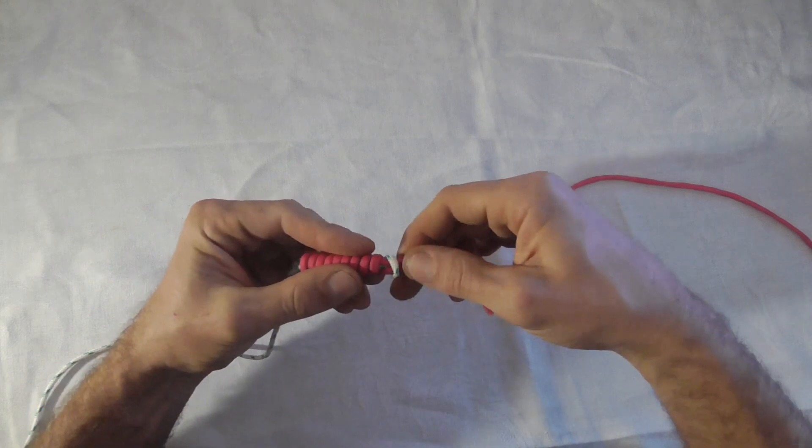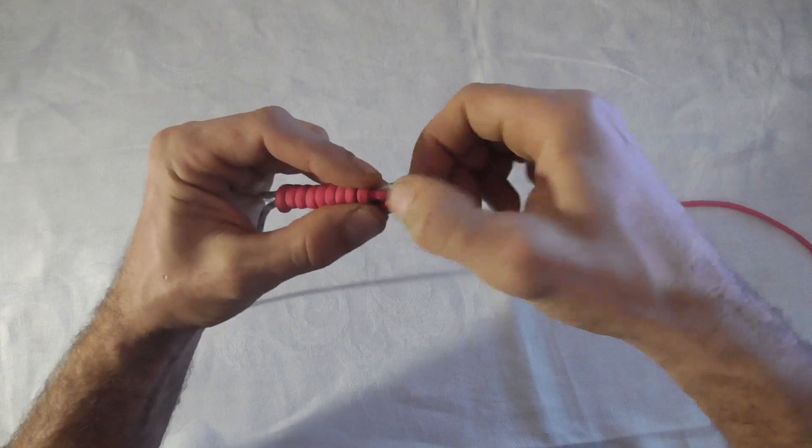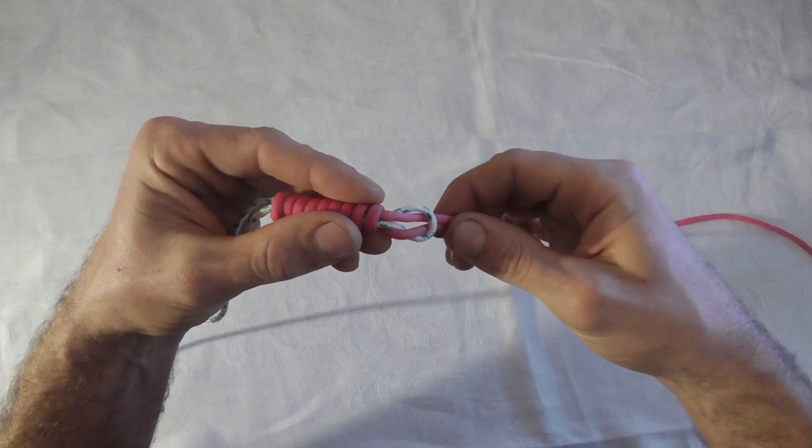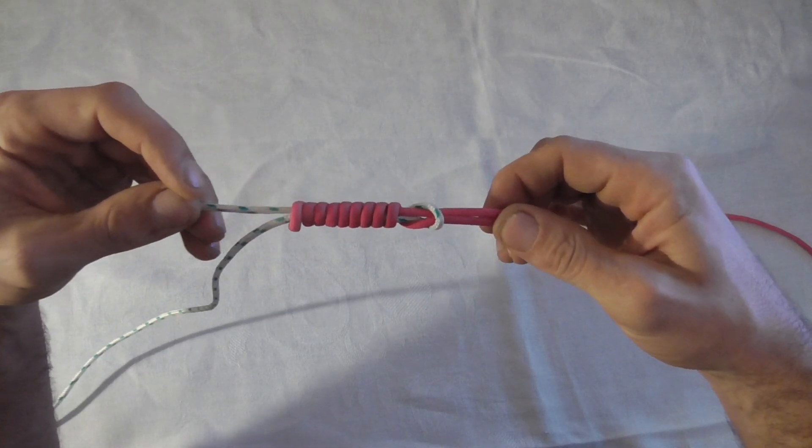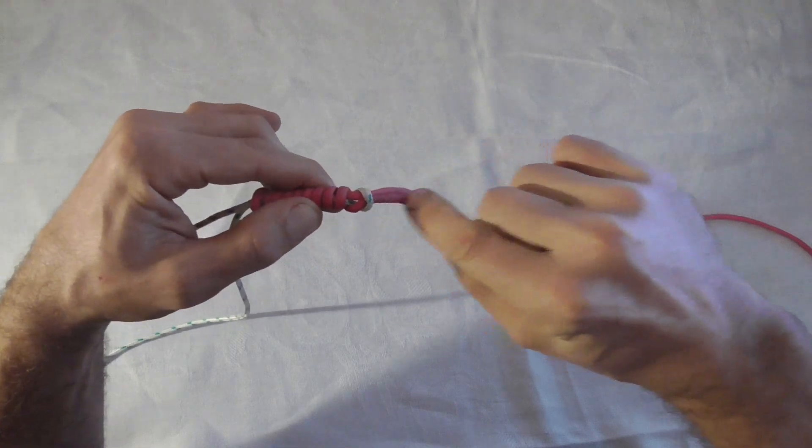Now one thing to note about this knot is this end loop. Notice how I've got both parts running down through that loop. When I tighten this down, then they're both going to stay nice and parallel.